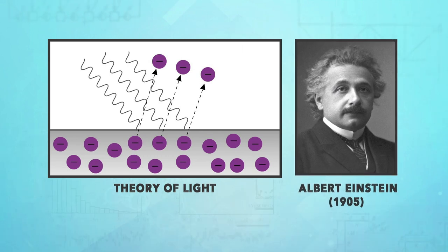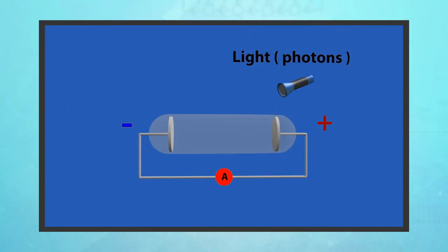In 1905, he proposed a radical new theory of light where he considered light to be made up of particles, or to be specific, photons.